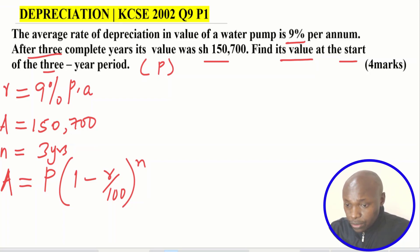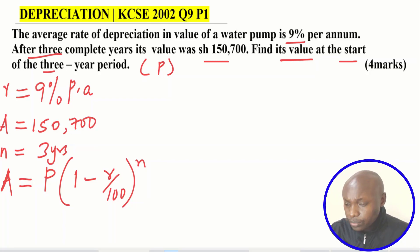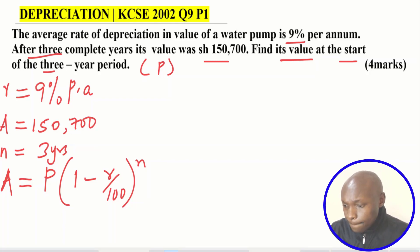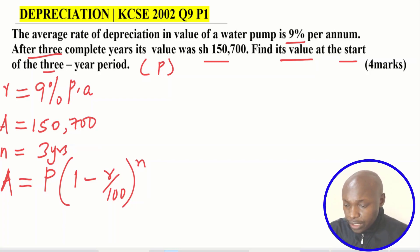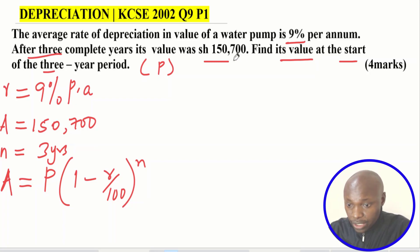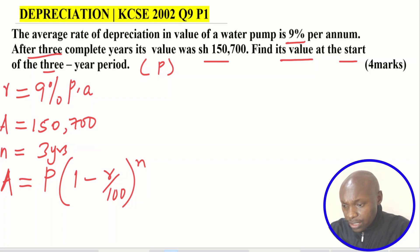This is the formula we use to calculate depreciation when given the rate, the period, and the amount. Most depreciation questions can be solved using this formula. We substitute what we have and calculate what we don't have. Here, A is the value after depreciation, P is the initial value at the start of the three-year period before depreciation, rate is nine percent, and n is the period.